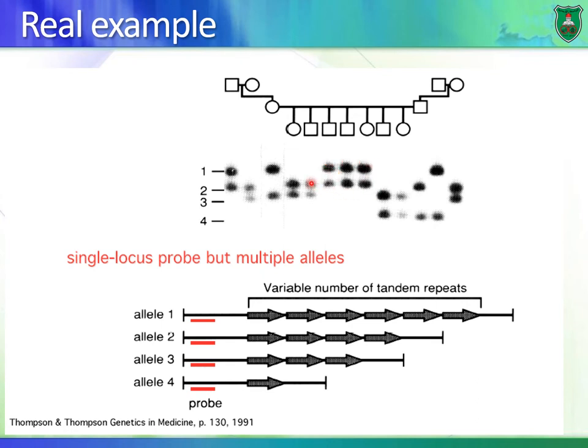How can we differentiate individuals that share the same pattern? We look at another allele, another VNTR, or another STR. In forensic medicine and paternity testing, they do not rely on one single VNTR or STR — rather, they look at multiple VNTRs and STRs.